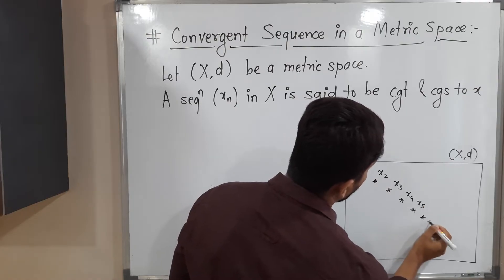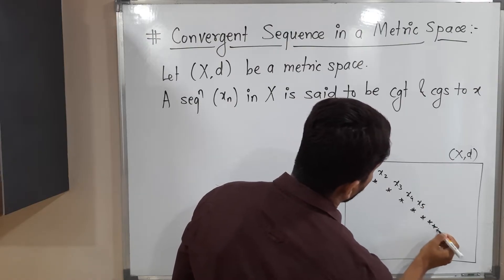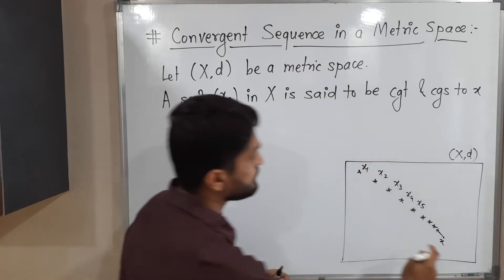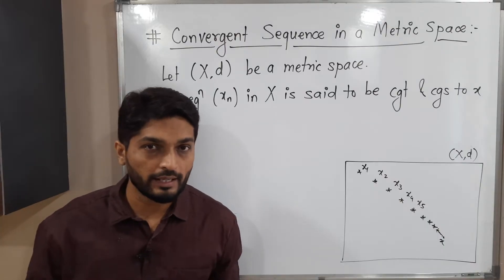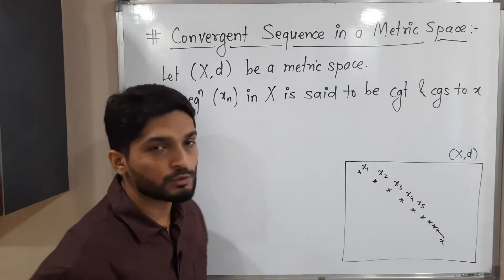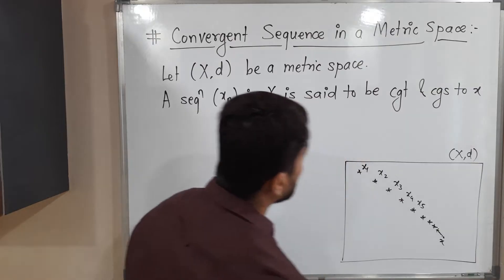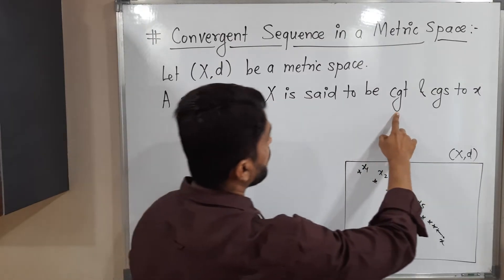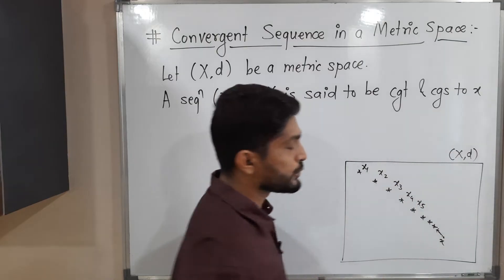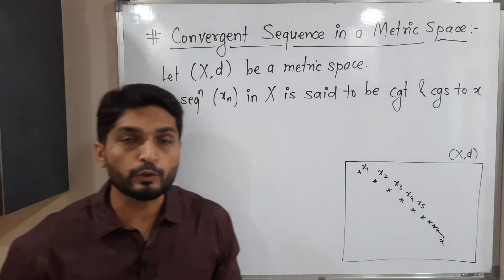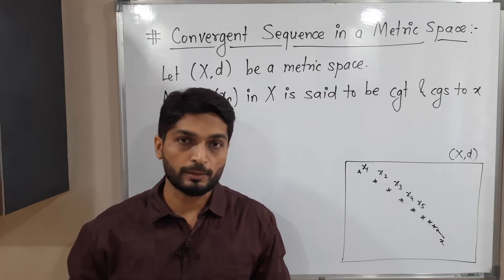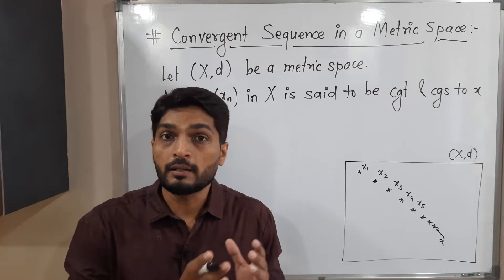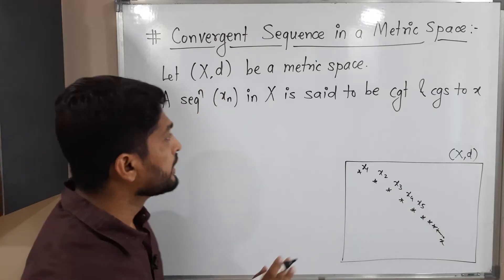That sequence has infinitely many terms, and those terms are gathered around a point X — all terms are moving towards a single point X. Such a sequence is called a convergent sequence. X_m is a sequence in X and it converges to X. Let us now see the epsilon definition, which we will write here. We have seen this definition in the first year, but now we are discussing it in the context of a metric space.